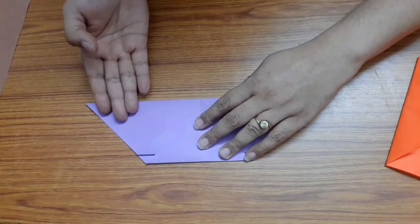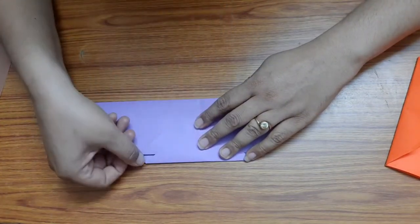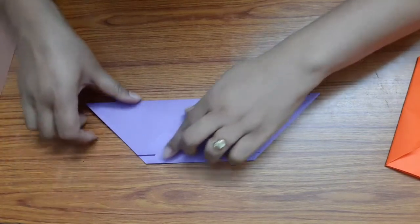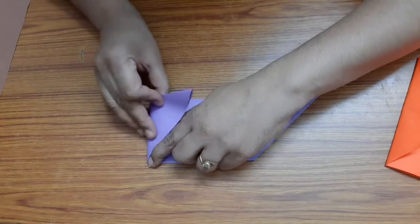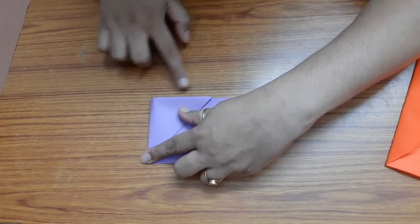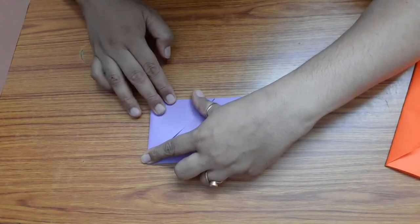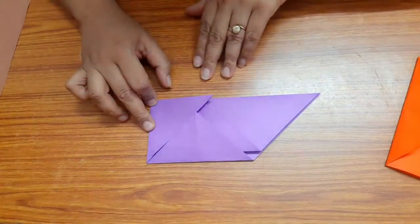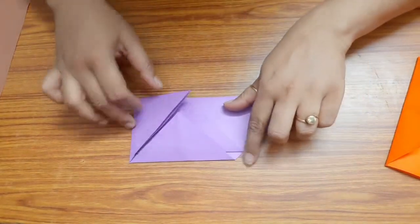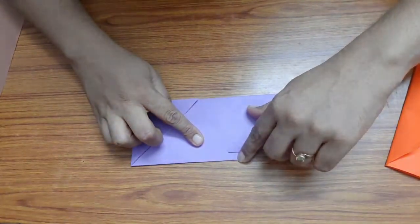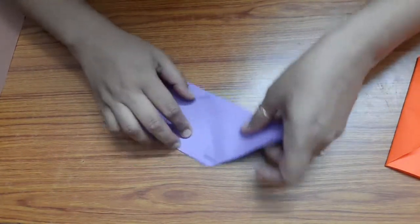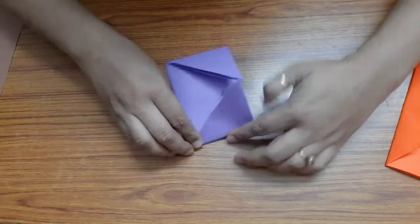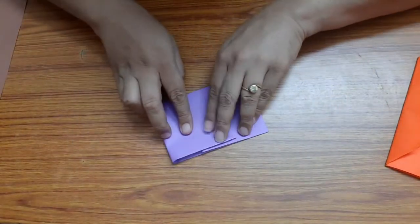Now we need to fold this inwards, and the fold has to start from this top corner. See that this line is aligned here. Same way here - start the fold from the top corner, fold it inwards, and see that this line is aligned.